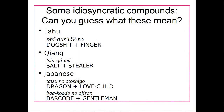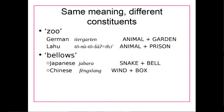There are some idiosyncratic compounds that are hard to guess the meaning of. In Lahu, there's a word that takes 'dog shit' and 'finger' and puts them together to get a new meaning — probably a hard one to guess. There's 'salt' plus 'stealer' in Chiang. In Japanese, they have 'dragon' and 'love child,' or 'barcode' and 'gentleman.' These are kind of idiosyncratic ones, but you may be able to figure them out through your book or some Googling.